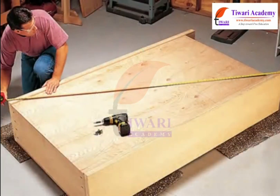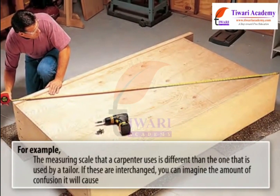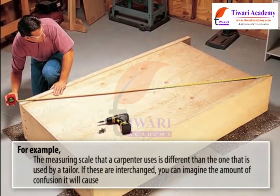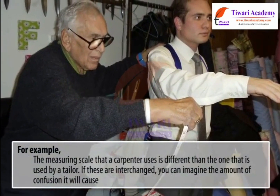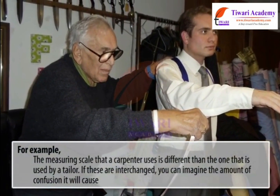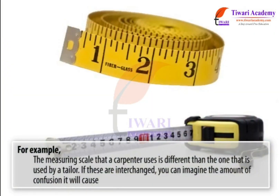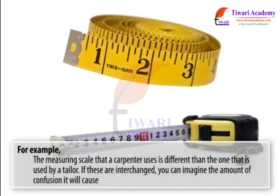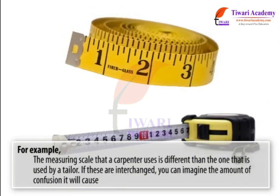For example, the measuring scale that a carpenter uses is different than the one that is used by a tailor. If these objects are interchanged, you can imagine the amount of confusion it will cause.